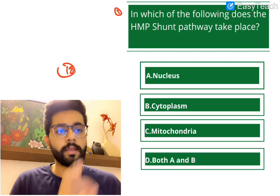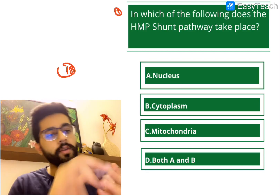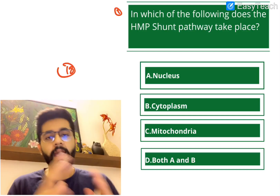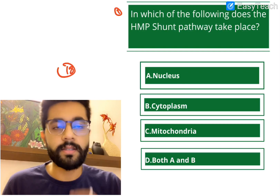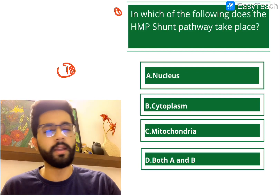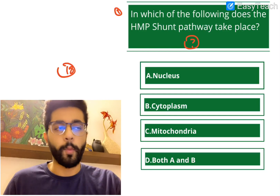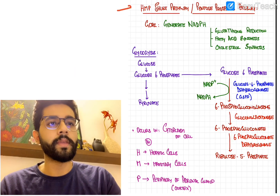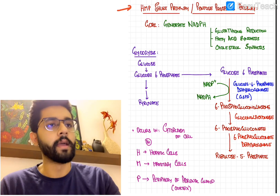A. Nucleus, B. Cytoplasm, C. Mitochondria, or D. Both A and B. Pause, think, and then we will discuss. The question here is essentially where does the HMP shunt pathway take place? Let's talk a little bit about it because it's fairly high yield.